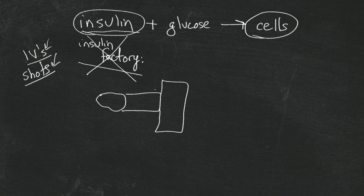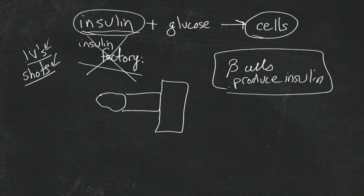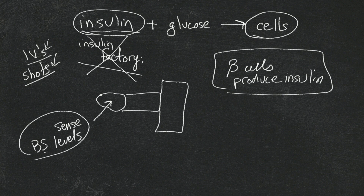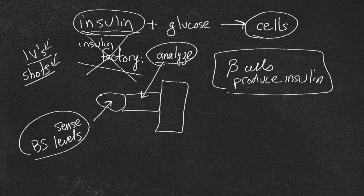These beta cells — the cells that produce insulin — not only produce insulin, they also sense blood sugar levels. They can tell how much sugar is in your blood. They not only sense it, but after they get that information they analyze it and determine whether you need some insulin or maybe glucagon. And then they deliver that insulin.